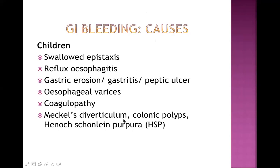Meckel's diverticulum, colonic polyps, and Henoch-Schönlein purpura are also important causes of GI bleeding in children. Henoch-Schönlein purpura has four features: rashes, abdominal pain (which can lead to GI hemorrhage), renal involvement (hematuria and proteinuria), and arthralgia or arthritis. The combination of rashes, abdominal involvement, kidney involvement, and joint involvement constitutes Henoch-Schönlein purpura.